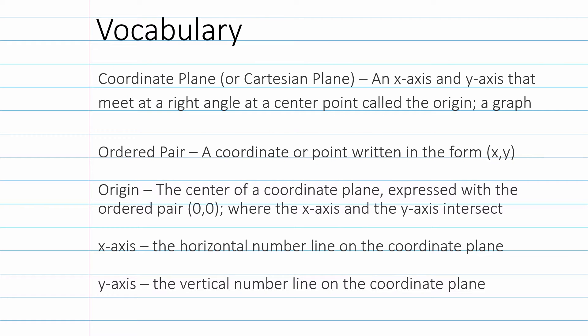So we're going to start with our vocabulary. We have the Coordinate Plane, also known as the Cartesian Plane. It's an x-axis and a y-axis that meet at a right angle at a center point called the origin; a graph. Then we have ordered pairs, a coordinate or point written in the form (x, y). Then we have the origin, which is the center of the coordinate plane, expressed with an ordered pair of (0, 0), where the x-axis and the y-axis intersect. Then we have the x-axis, which is the horizontal number line.